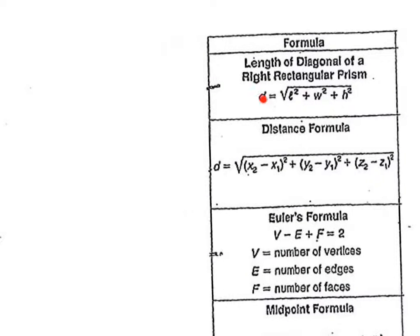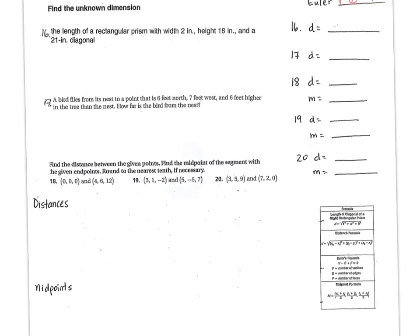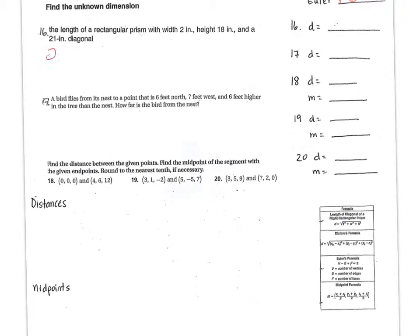So what we're given is the diagonal, and then we're given two of these pieces. So we need to put the diagonal on the left side. So diagonal is 21, equals the square root of, and they're given the width and the height. So what are we missing? The length. So it's going to be L squared plus 2 squared plus 18 squared. And then you simplify that. L squared plus 328 when you add them up. Yeah, 324 and 4 is 328. That's right.